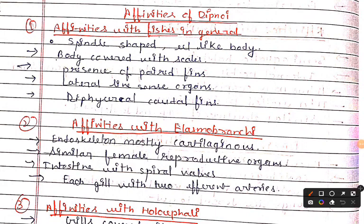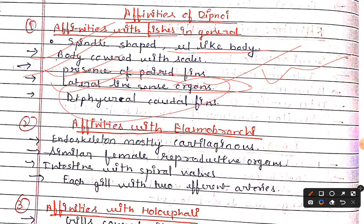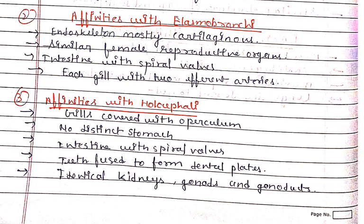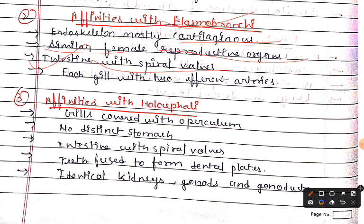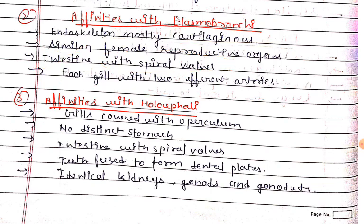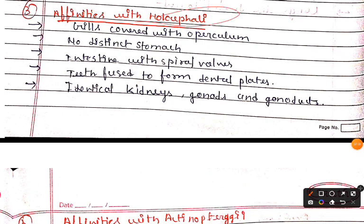Affinities with general fishes: spindle-shaped body, body covered with scales, presence of paired fins, and lateral line sense organs. Affinities with Elasmobranchii: endoskeleton mostly cartilaginous, similar female reproductive organ, intestine with a spiral wall, each gill with two different arteries. Affinities with Holocephali have also been discussed in a previous video.